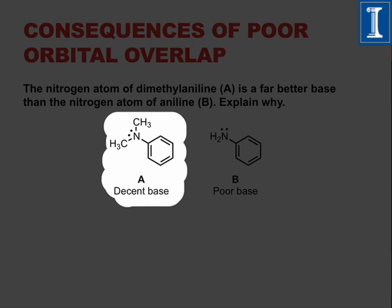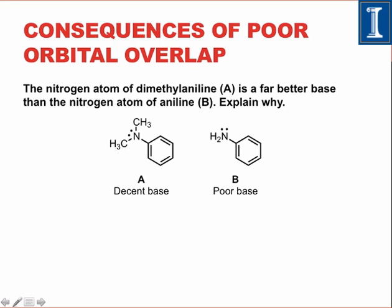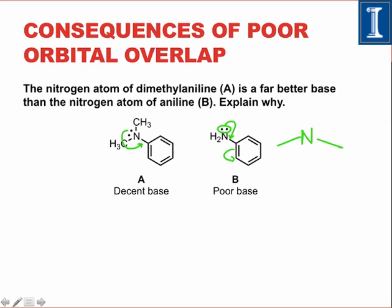The nitrogen atom of dimethyl aniline (molecule A) is a better base than the nitrogen atom of aniline (B). For both molecules, we can draw resonance forms showing delocalization of the lone pair into the pi-star orbital of the benzene ring. The resulting resonance forms suggest the lone pairs are not as basic as we would expect from a plain amine whose lone pair is not in conjugation with any other group. But for some reason, the resonance arrows are not as important in the case of A as in the case of B, and the issue really is one of geometry.